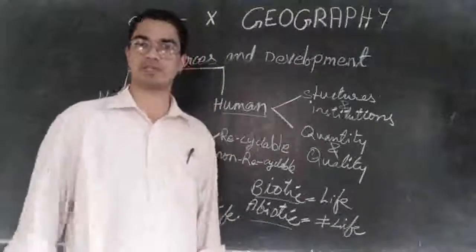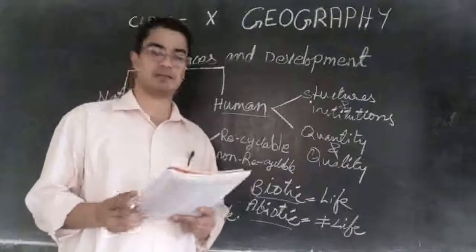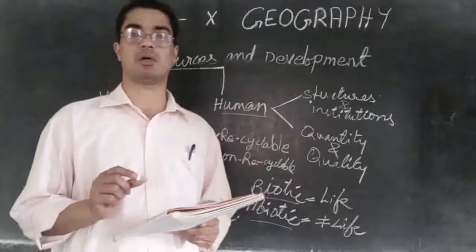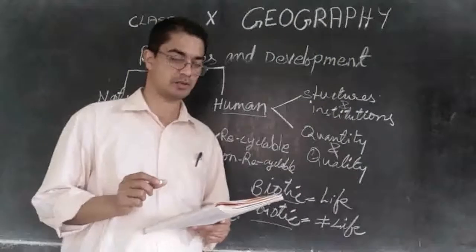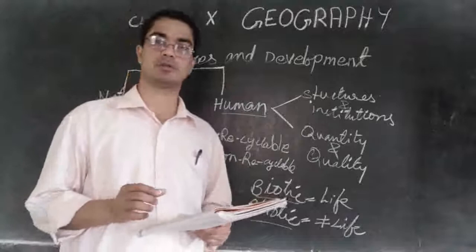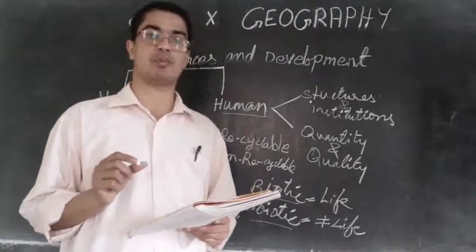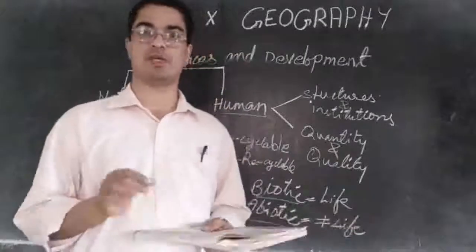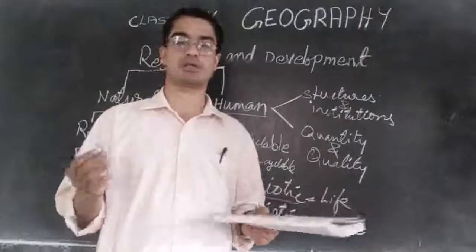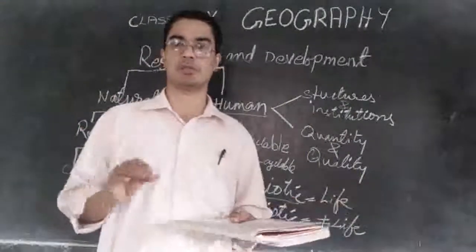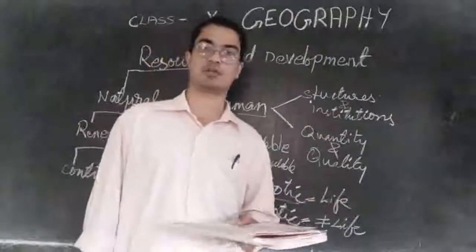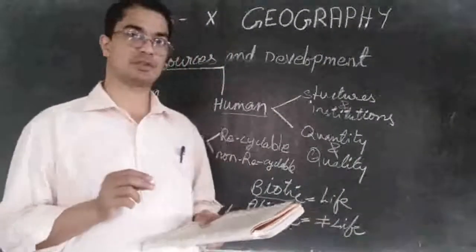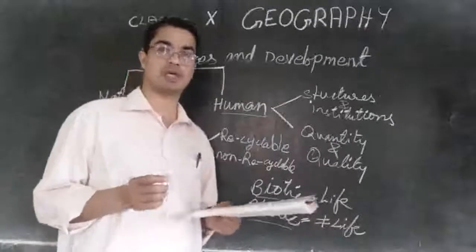Abiotic resources are just the opposite — the resources that do not have life. All those things which are composed of non-living things are called abiotic resources. For example, rocks and minerals. A rock has no life — it remains in the same place, it may get worn out over time but it will never move or grow. Minerals under the earth also have no life. That is the division of resources based on origin.